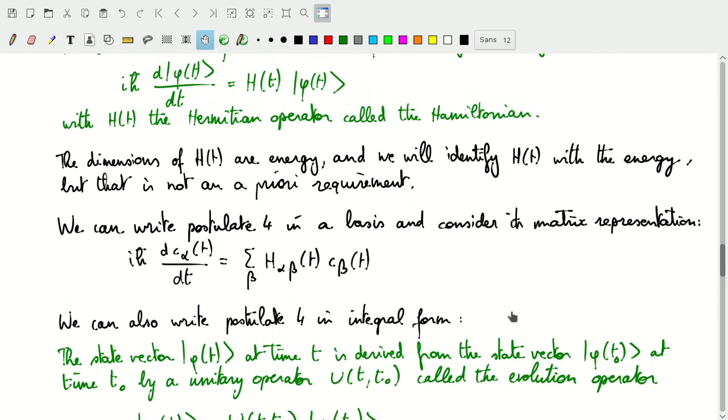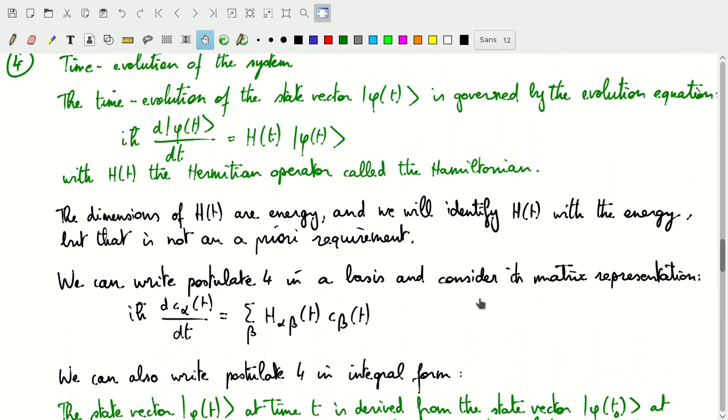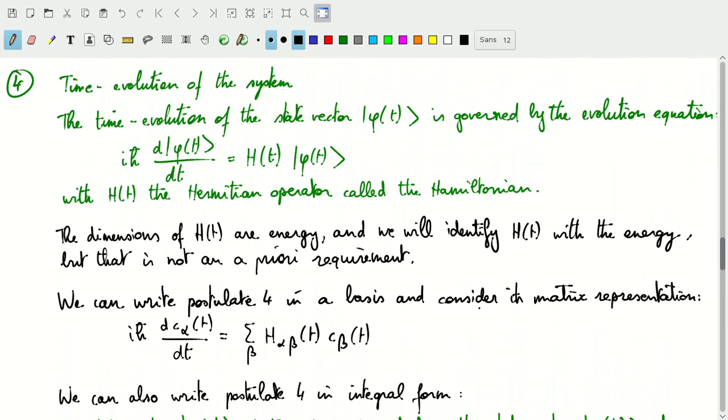We can also write this differential equation of the time evolution in a basis, in any basis and consider the matrix representation. So if we write our state phi as a collection of coefficients multiplied with a basis, with basis vectors, then those coefficients will pick up a time dependence and so we'll have a relationship between our set of coefficients at, in this case with one time,